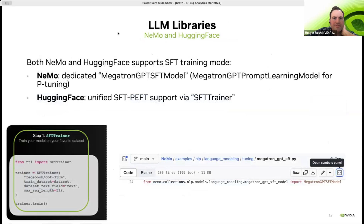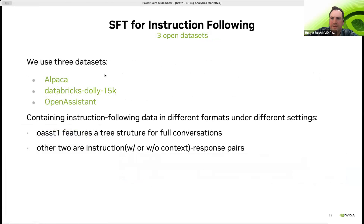We have two frameworks shown as examples for supervised fine-tuning: the NeMo framework by NVIDIA, and also a Hugging Face example using the Hugging Face trainer, which is not based on PyTorch Lightning. The dataset is a combination of publicly available instruction-following datasets — the kind of chat-style model you want to train — and we assume each client has one of these datasets.